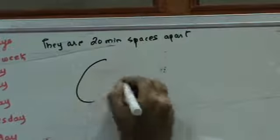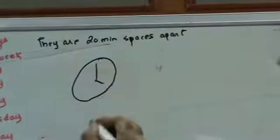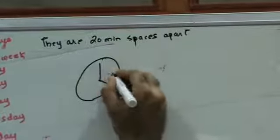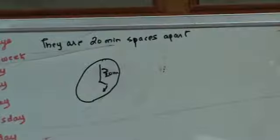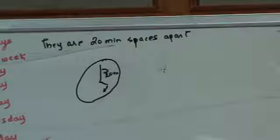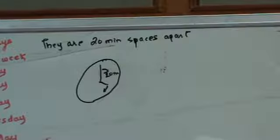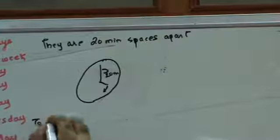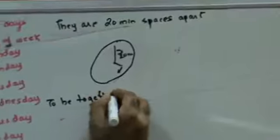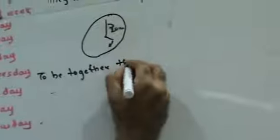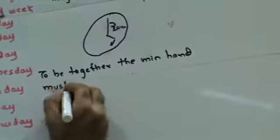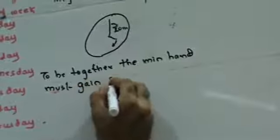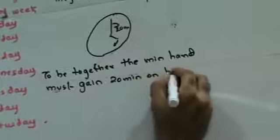At 4 o'clock this is the minute hand and this is the hour hand; they are 20 minutes apart. As both move, if the minute hand covers 20 minutes more than the hour hand, only then will the two hands be together. So to be together, the minute hand must gain 20 minutes on the hour hand.